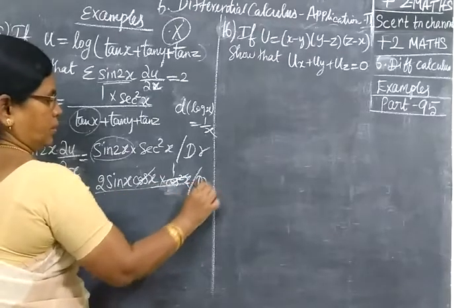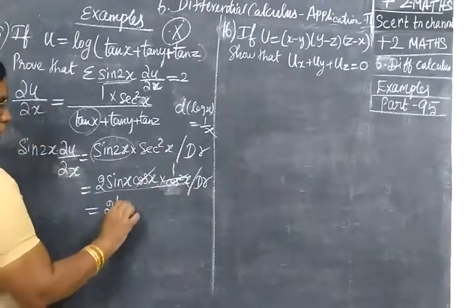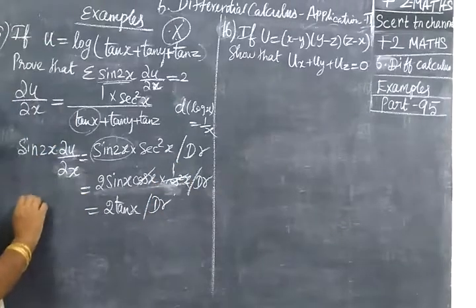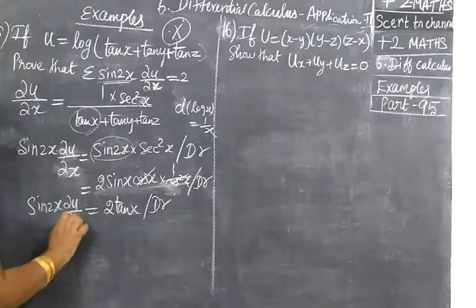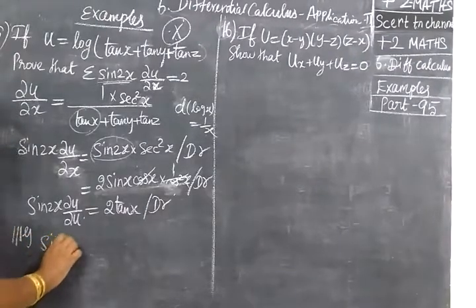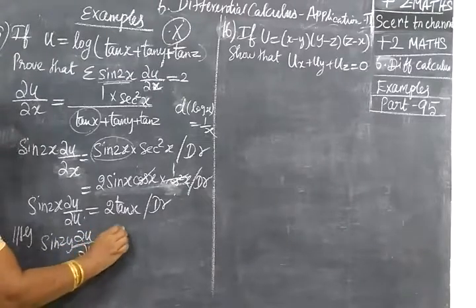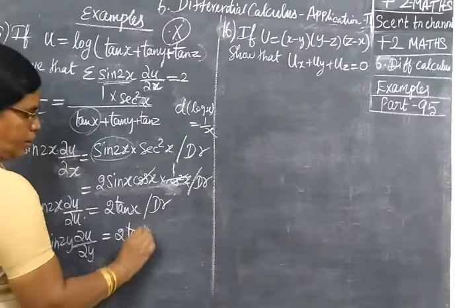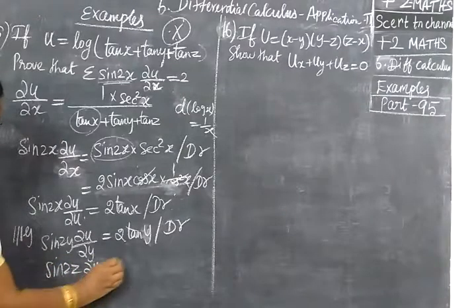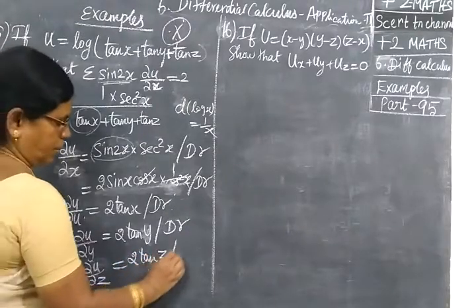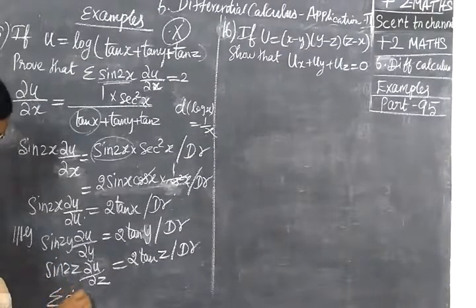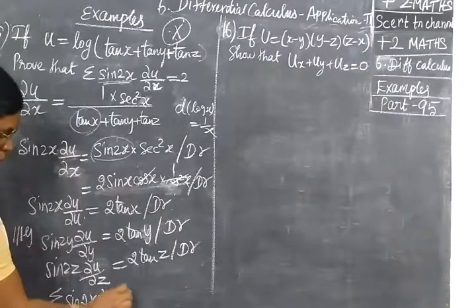That comprises sin 2x dy/dy. So this is simple to do this. Similarly, sin 2y dy/dy equal to 2 tan x tan y by denominator, then sin 2z dy/dy equal to 2 tan x by denominator.